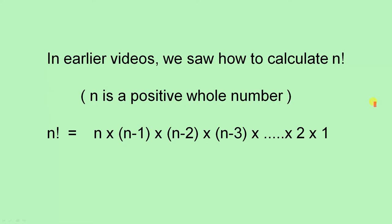In earlier videos, we saw how to calculate n factorial, where n is a positive whole number. n factorial was n times n minus 1 times n minus 2 times n minus 3, etc., times 2, times 1.